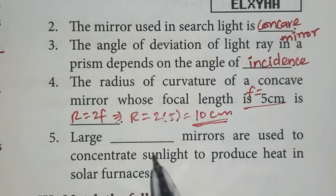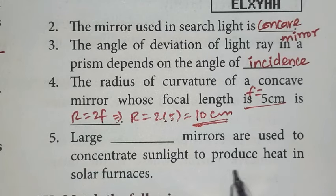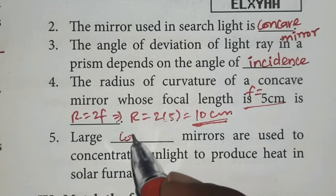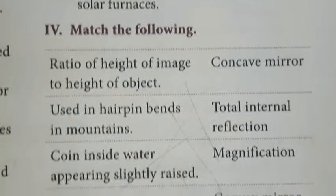Fifth one, large concave mirrors are used to concentrate sunlight to produce heat in solar furnaces. Next, fourth part, match the following.